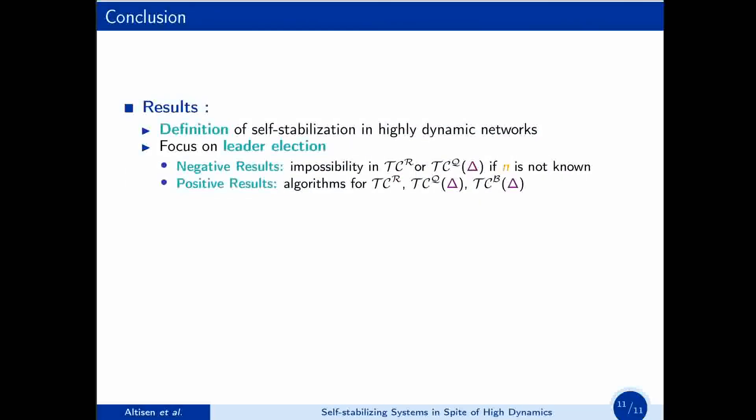As a conclusion, we proposed a new definition of self-stabilization suited for highly dynamic networks. We then focused on leader election. We have both negative and positive results, with the impossibility of solving self-stabilizing leader election in TCR or TCQ if the exact knowledge of n, the number of processes, is not known. And with three different algorithms, respectively, for classes TCR, TCQ-delta and TCB-delta. Our future work will focus on extending this study to other TVG classes, but also to other fundamental problems, such as synchronization. Thank you.